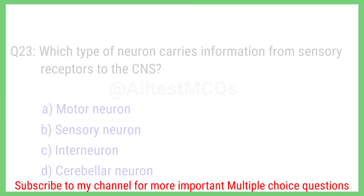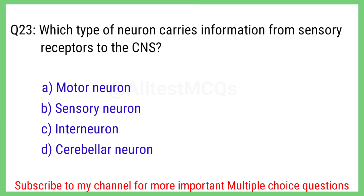Question number 23. Which type of neuron carries information from sensory receptors to the CNS? The right answer is option B. Sensory neuron.